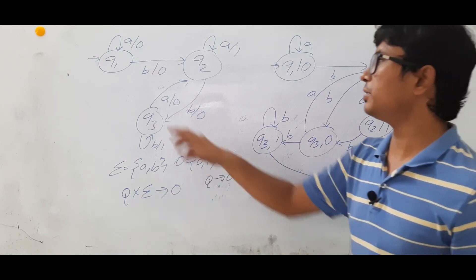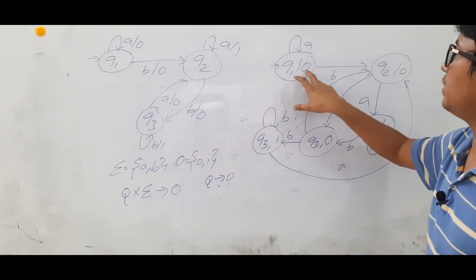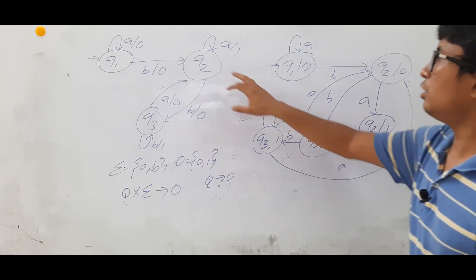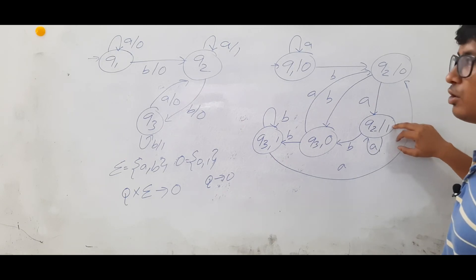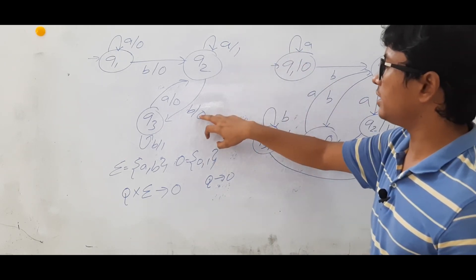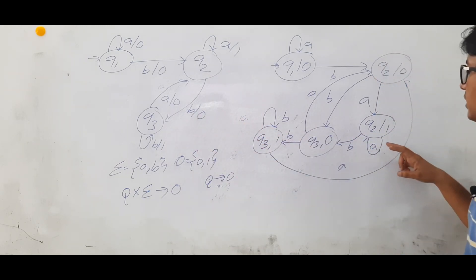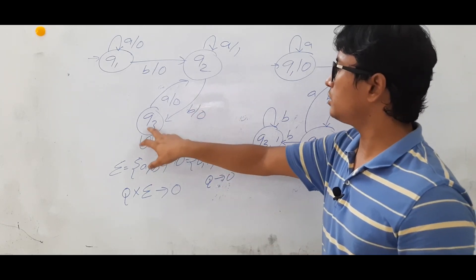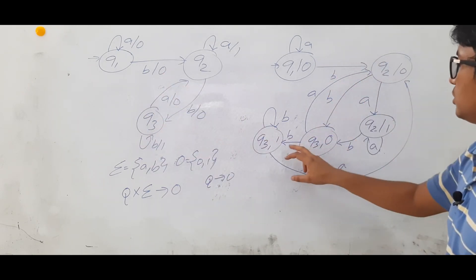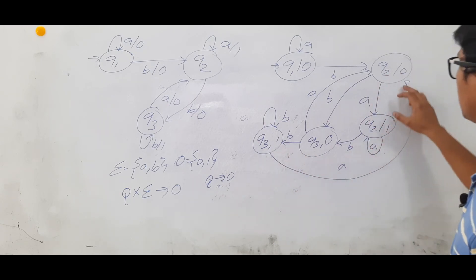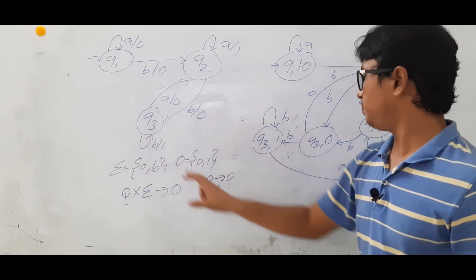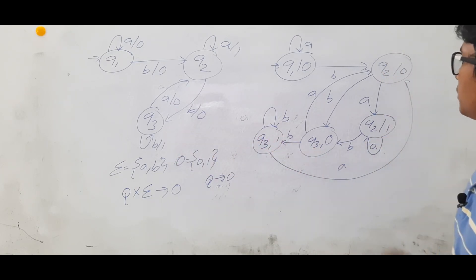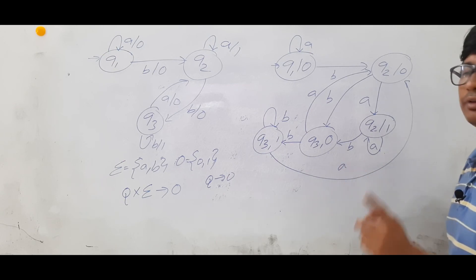Now we will verify everything is completed. Q1 on A is going to Q1 generating output as 0 — done. Q1 on B is going to Q2 generating output as 0 — done. Q2/0 on A is going to Q2/1 generating output as 1 — done. Q2/0 on B is going to Q3/0 generating output as 0 — done. Q3/0 on A is going to Q2/0 generating output as 0. Q3 on B is going to Q3/1 generating output as 1. Q3/1 on A is going to Q2/0 — so all the states are finished and everything is following the DFA property.